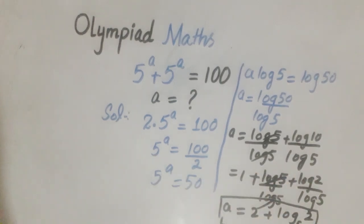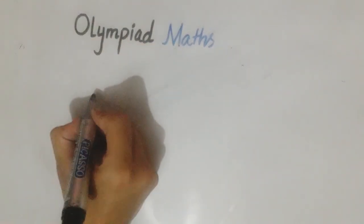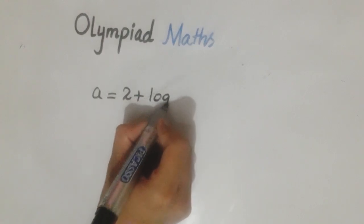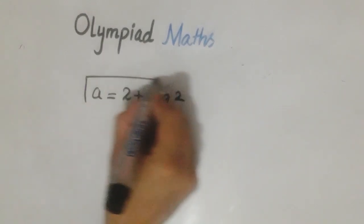We write the final answer as: a equals 2 plus log base 5 of 2. This is the final answer.